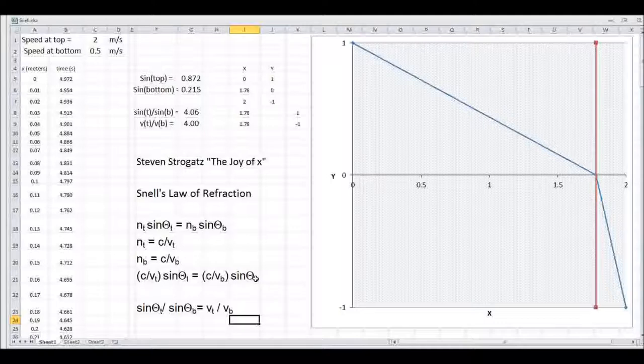So when you make that substitution, cancel out the C's, rearrange the terms, you get this relationship. The ratio of the sines of the two angles, incidence and refraction, is equal to the ratio of the two velocities.